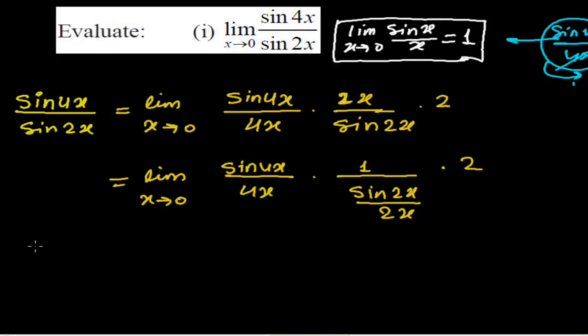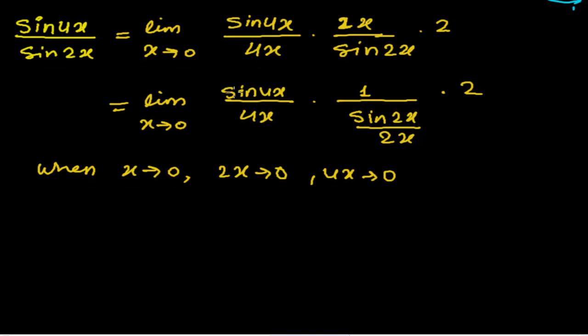So again, limit when x tends to 0, sin 4x divided by 4x times 1 whole divided by sin 2x divided by 2x, times 2. Now you know, when x tends to 0, 2x also tends to 0, and 4x also tends to 0. Because this x is almost very close to 0. So 2x and 4x will also be very close to 0.